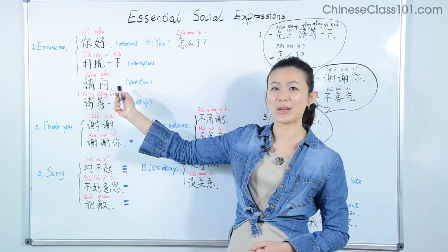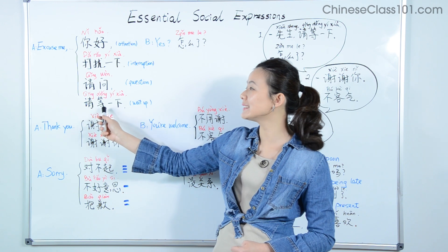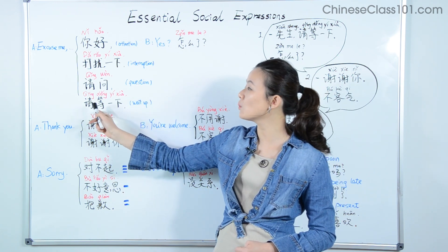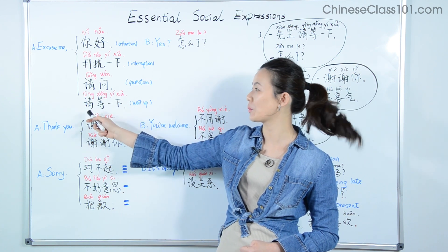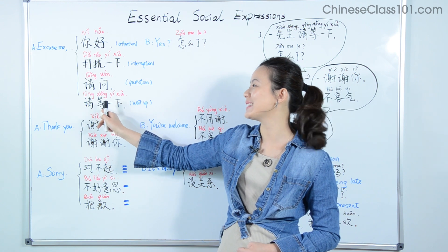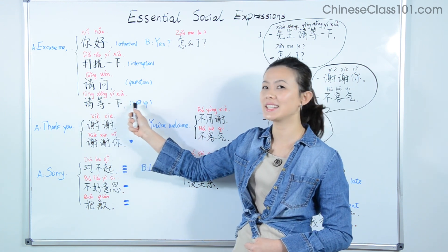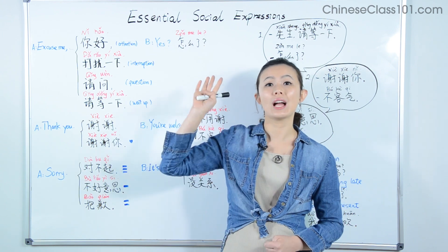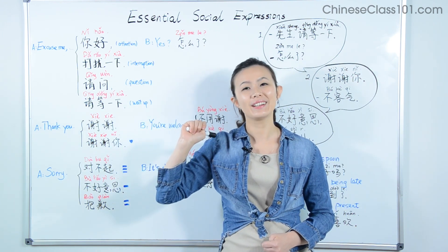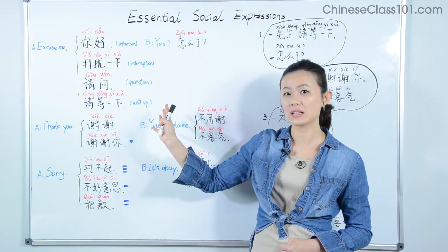请问 is a very useful phrase for asking questions. The last expression is 请等一下, which literally means 'please wait a bit.' We know 请 means 'please' and 一下 means 'a bit.' The verb 等 means 'to wait,' so 请等一下 is asking someone to wait up a sec. These are a few different ways to say 'excuse me' in Chinese.